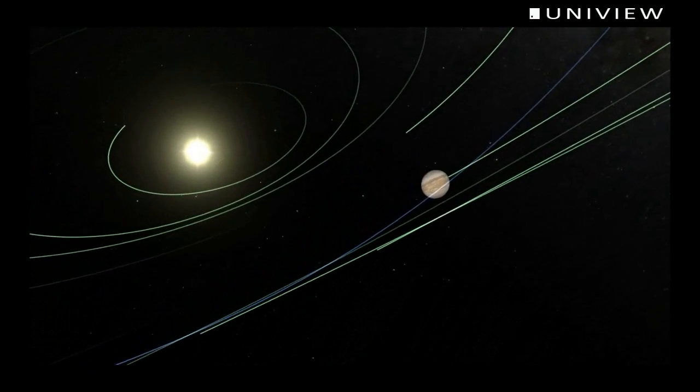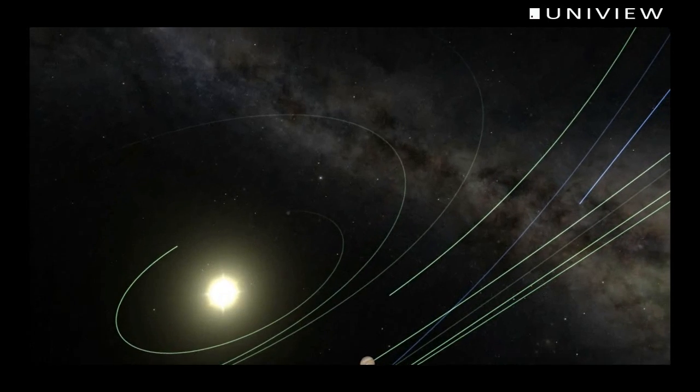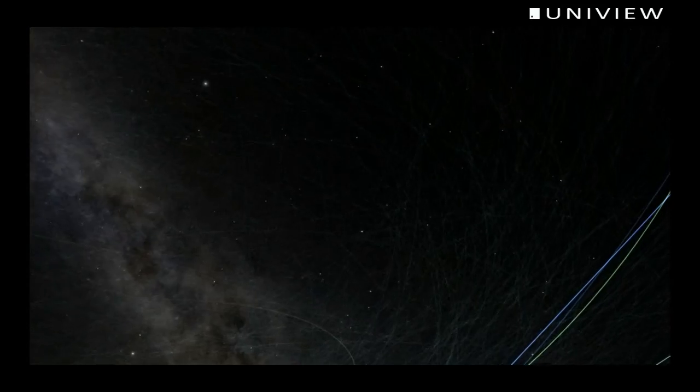Beyond the inner rocky planets are the gas giants, Jupiter being the largest and the closest. But the planets are not the only inhabitants of our solar system.